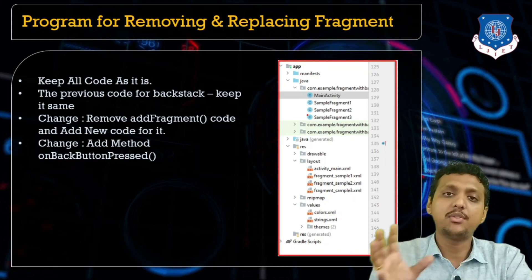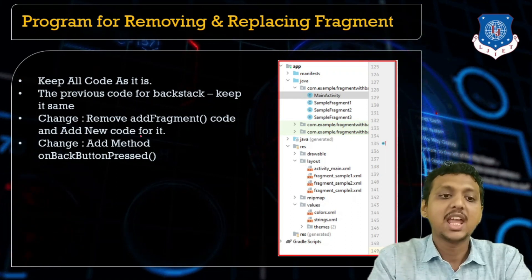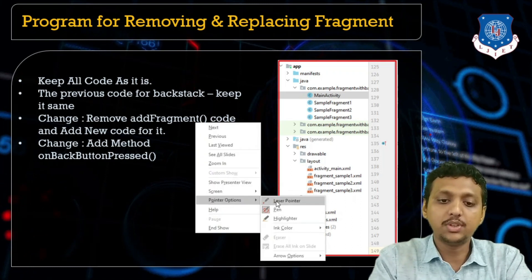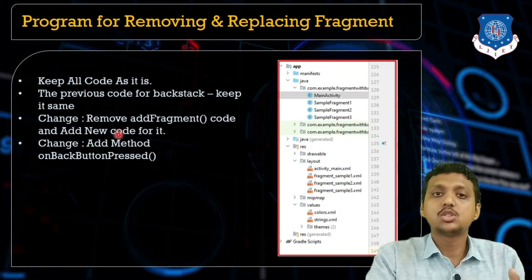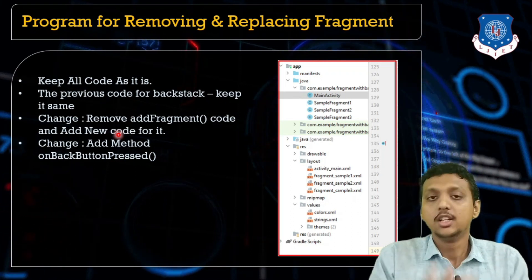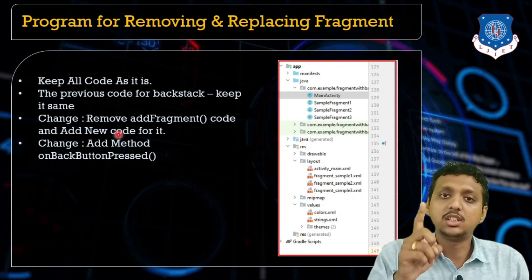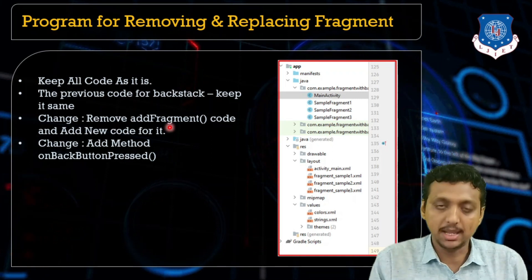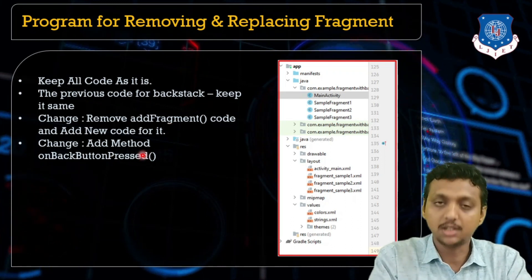Now what we need to do is change the code to remove the fragment, and we need to implement a method known as onBackButtonPressed. These are the two things we need to focus on: number one, write code to remove the fragment, and number two, comment out the previous addFragment method and implement a new addFragment method without addToBackStack.